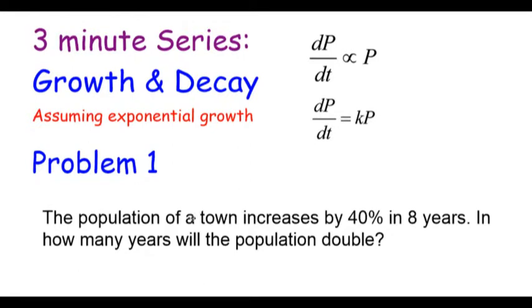The first problem is a population increasing, so we know it's a growth situation and k will be positive. The population of a town increases by 40% in eight years. In how many years will the population double?